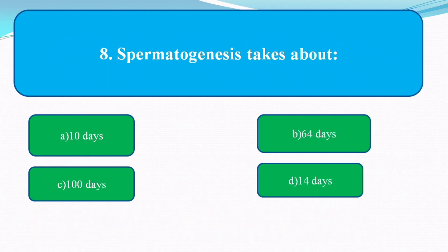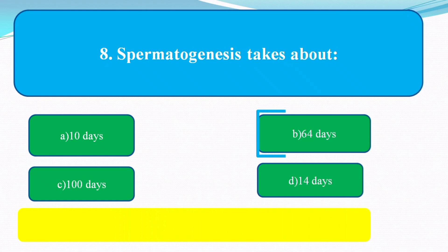Spermatogenesis takes about how many days? The options are: 10 days, 64 days, 100 days, 14 days. The answer is 64 days.